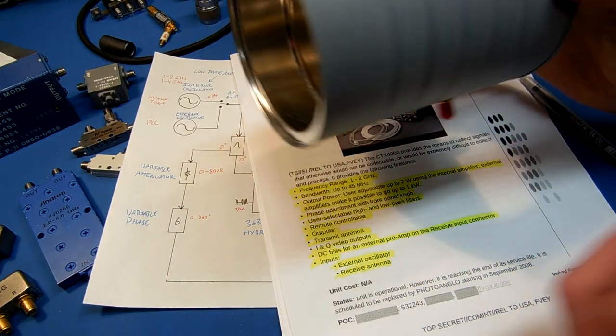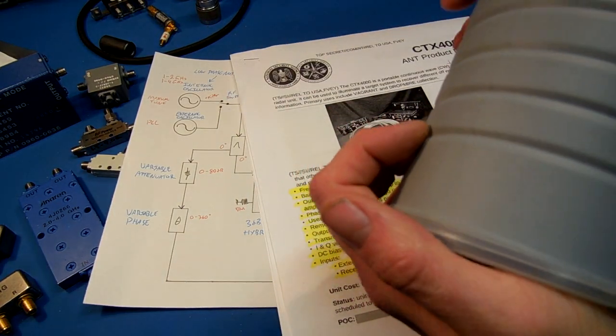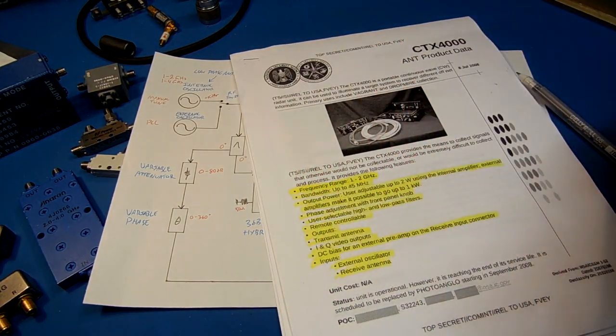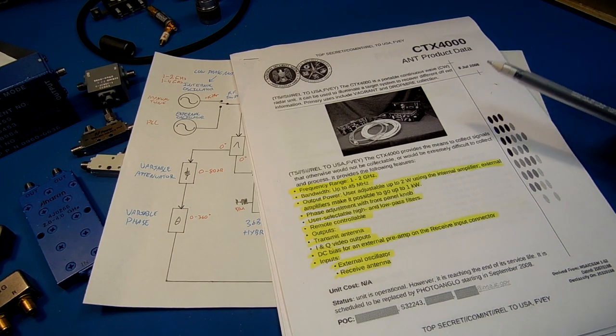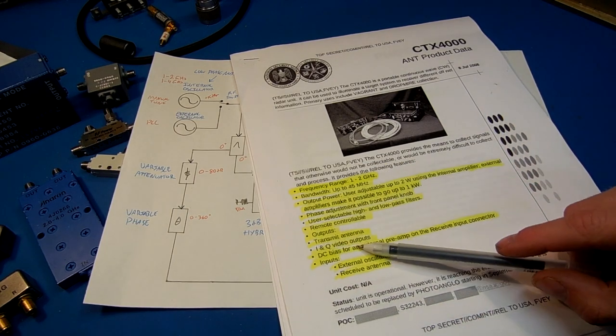this would be your transmit and your receive antennas. And these essentially isolate each other so you won't have to... Just because you need so much isolation between your transmit and receive in a device like this, it just helps to improve the isolation.